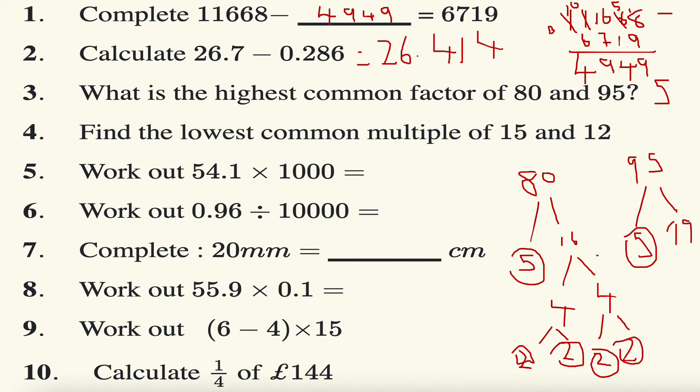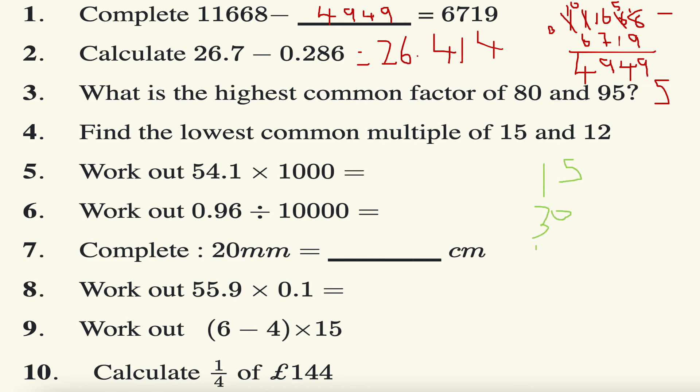Next question: lowest common multiple of 15 and 12. I'm looking at the times tables here, and seeing the smallest number that appears in both times tables. Remember that the word multiple means times, times tables. So I've got 15, 30, 45, 60, and let's leave it there for a second. Let's look at 12, 12, 24, 36, 48.